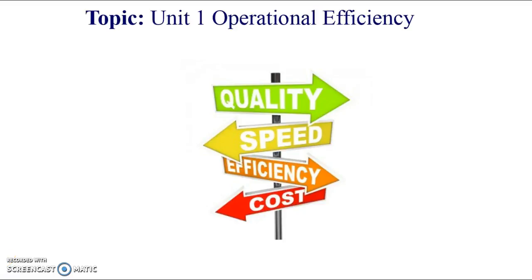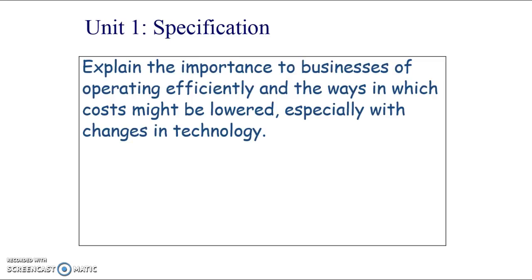Operational efficiency is one of the most important parts of this course. Most students understand the relationship between more sales equalling more revenue equalling more profit, but often students don't think about the other side of profit — costs. Getting your costs as low as possible, and specifically getting the average cost or unit cost per item as low as possible, increases profit margins.